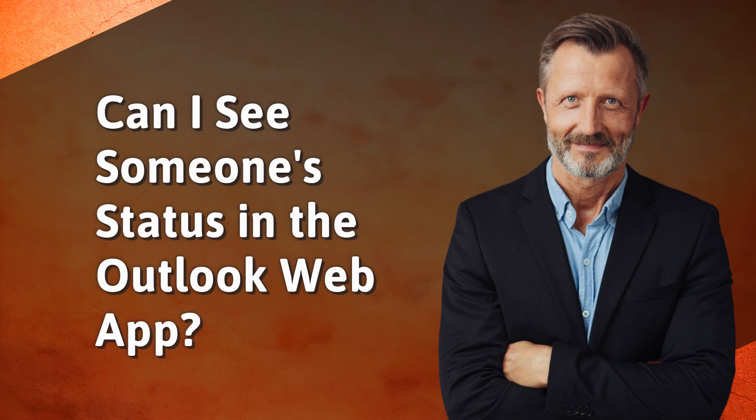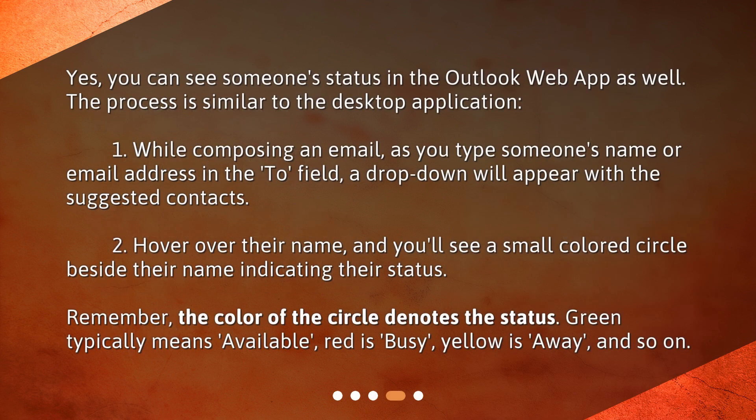Can I see someone's status in the Outlook web app? Yes, you can see someone's status in the Outlook web app as well. The process is similar to the desktop application. 1. While composing an email, as you type someone's name or email address in the To field, a drop-down will appear with suggested contacts. 2. Hover over their name, and you'll see a small colored circle beside their name indicating their status. Remember, the color of the circle denotes the status: green typically means available, red is busy, yellow is away, and so on.